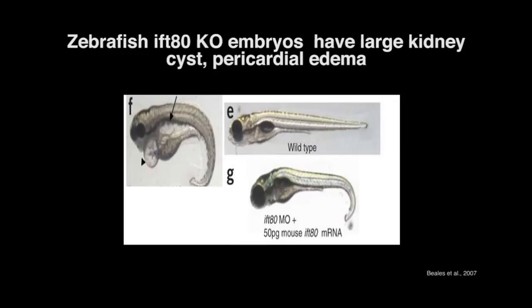To better understand ciliopathies, scientists are using mouse model or zebrafish model. Zebrafish is used as a model as it's inexpensive, it's small enough to be managed easily. And most importantly, fish embryo development is similar to other species, so it provides a basis for comparative embryological studies.